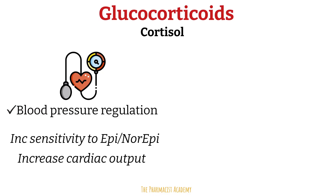There is one more way cortisol regulates blood pressure. Because cortisol is structurally similar to aldosterone, it can act like aldosterone and bind to aldosterone receptors, leading to sodium retention and potassium excretion. This only occurs with certain conditions like Cushing's syndrome, when excess cortisol overcomes the body's mechanism that normally prevents cortisol from binding to aldosterone receptors.